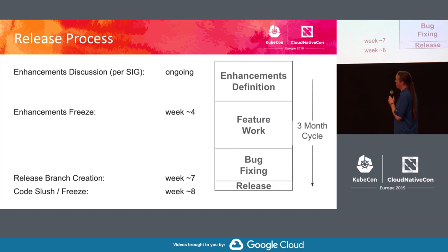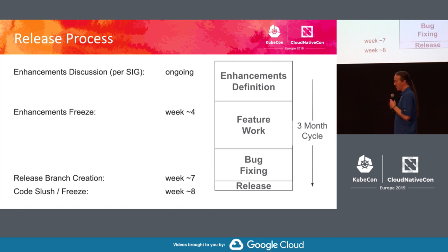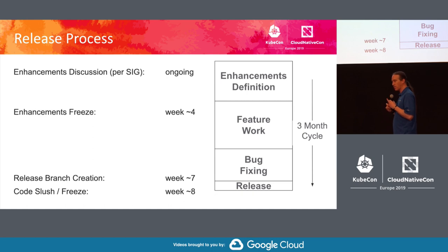In the fourth week, we have what's called the enhancements freeze, where we have a listing of all the major intended work for that release. These take the form of Kubernetes Enhancement Proposals — a formalized document. Each enhancement targeting the release should have a KEP in an implementable state, which includes not just a design and architecture, but also a documented upgrade strategy, how the feature will be versioned across future Kubernetes releases, a documented test plan, test cases, and documentation as well.